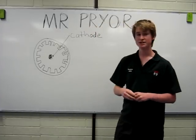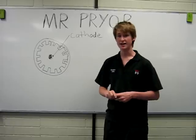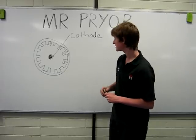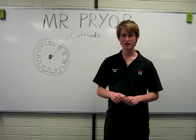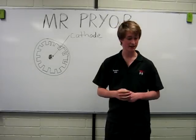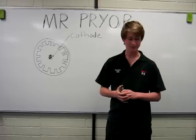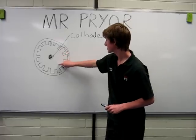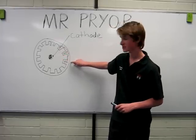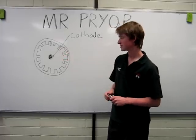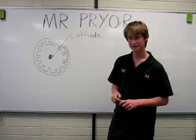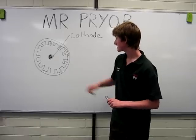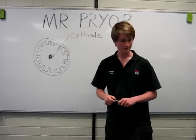The cathode filament is a thermionic emitter, so it emits electrons by heating up the filament. These electrons are attracted to the outer anode because it's positively charged and the electrons are negatively charged. This is called the anode vane block.